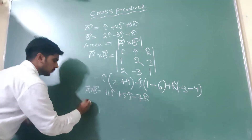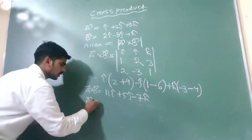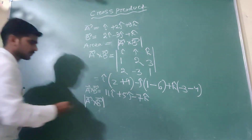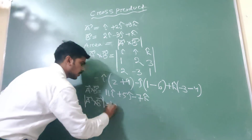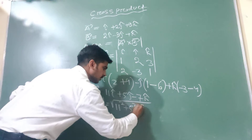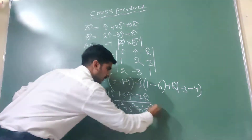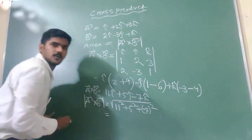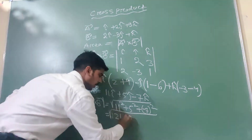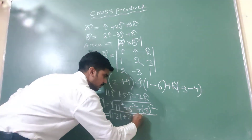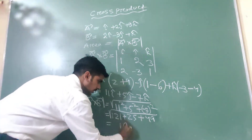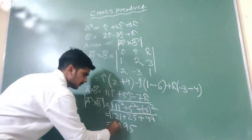For the area, we have to find the magnitude of this vector: A vector cross B vector magnitude equals the square root of 11 squared plus 5 squared plus minus 7 squared, which is root of 121 plus 25 plus 49. I think that is root of 195.